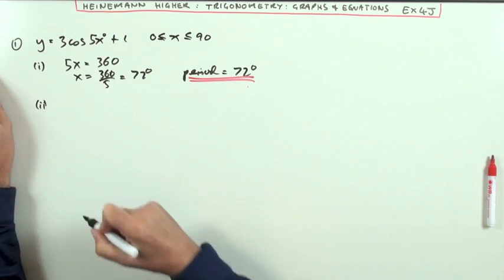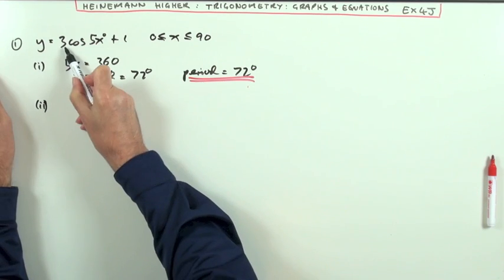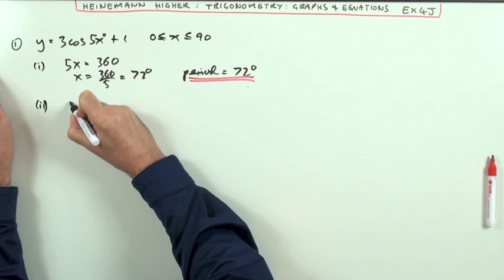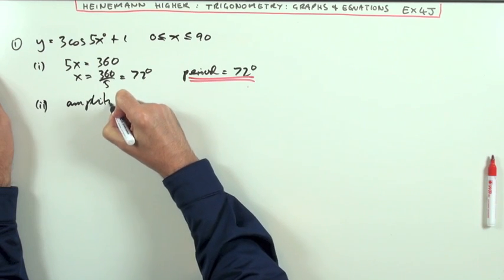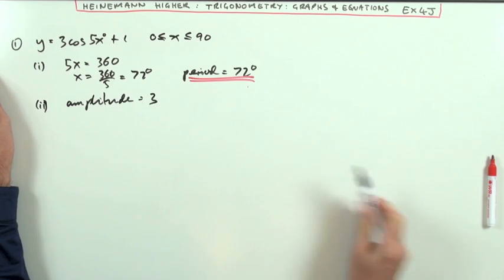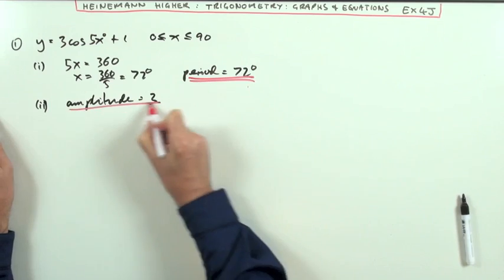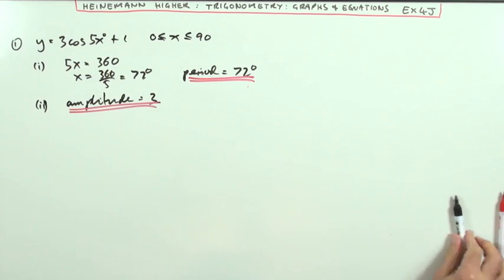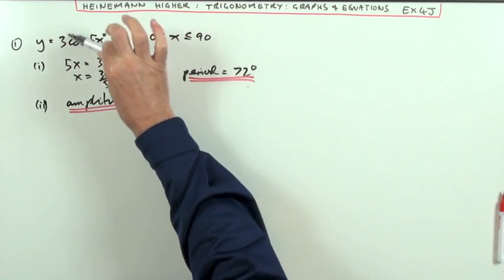Part two is easier. The multiplying number is 3, so its amplitude is 3. That's easy. It doesn't ask for the vertical shift, which is that 1 outside of the cosine calculation affecting the answer up and down.